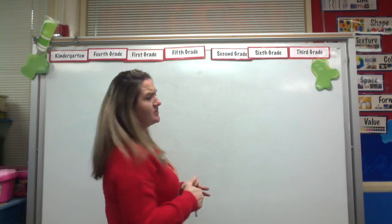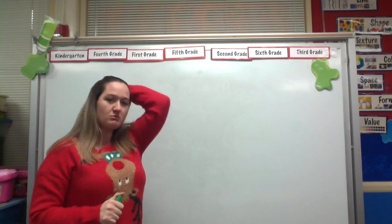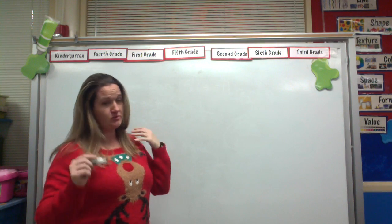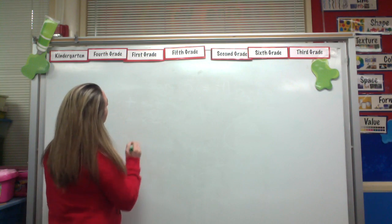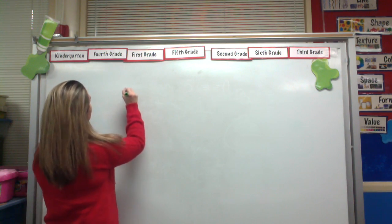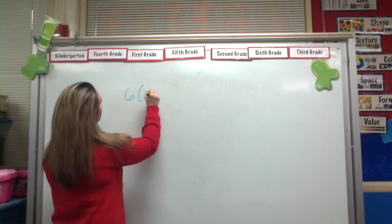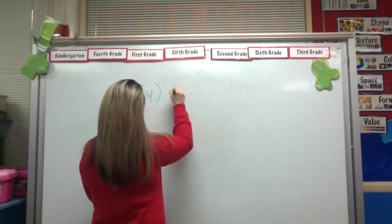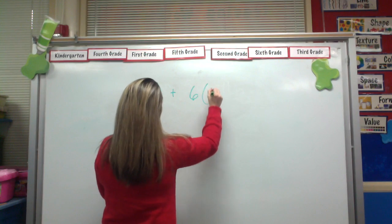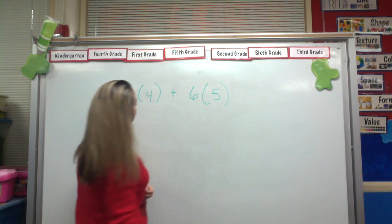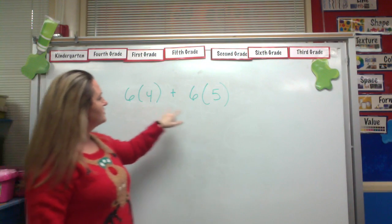Let's talk about the distributive property. You probably intuitively know what this is, but you might not know what it's called. Say I've got a problem like 6 times 4 plus 6 times 5. It's kind of broken into two parts.